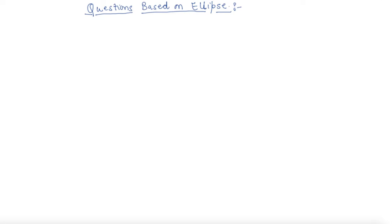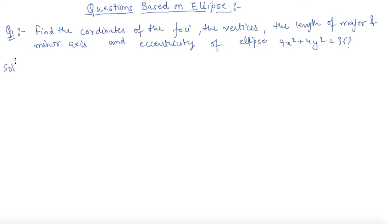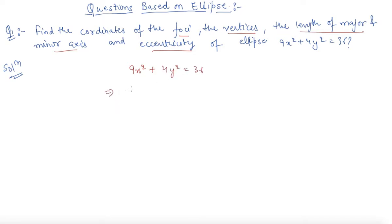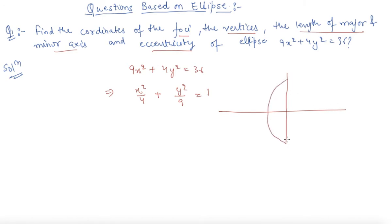Let me first write the question. Here we are given a question in which we have to find out the coordinates of foci, vertices, the length of the major and minor axes, and also the eccentricity of the ellipse. Let me first convert this equation into the standard form of ellipse. We will divide the whole equation by 36, so what we get is x² / 4 + y² / 9 = 1. So the ellipse looks like this.